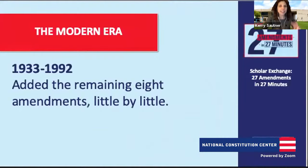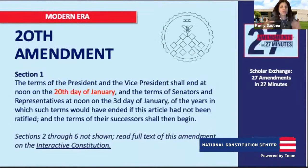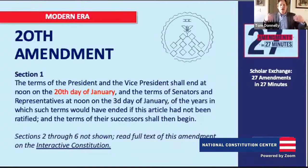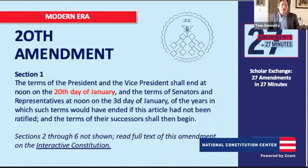Now we move into the modern-ish era, the 1930s to 1990s. The 20th Amendment is an editing amendment — it clarifies and updates the Constitution by moving the presidential and congressional transition date from March to January, limiting the time between an election and a new government taking office. This reduced what was called a 'lame duck' period.